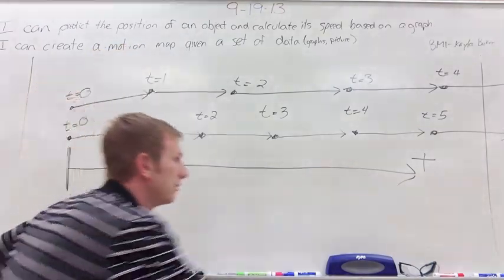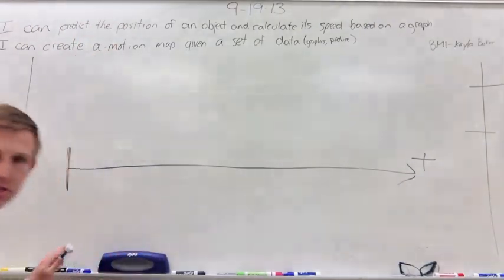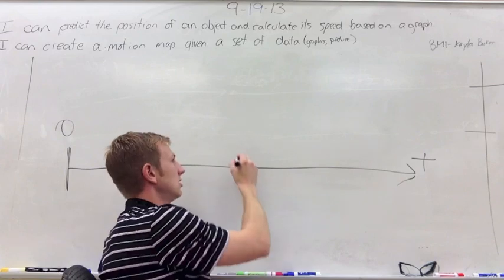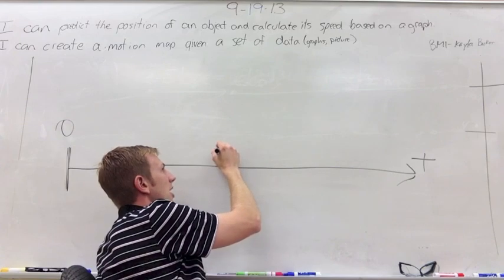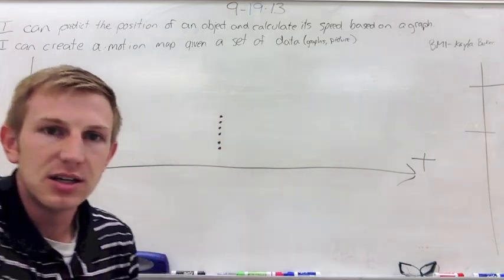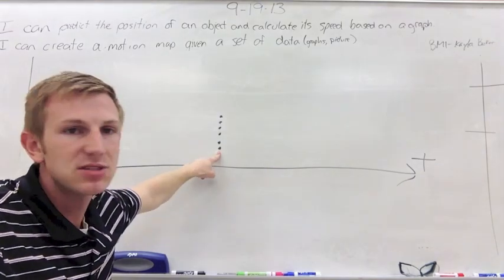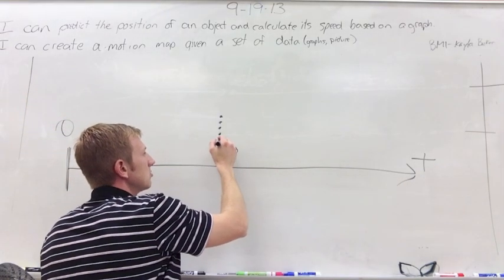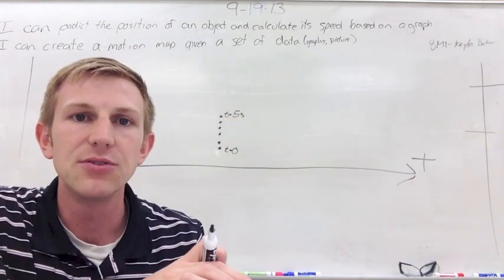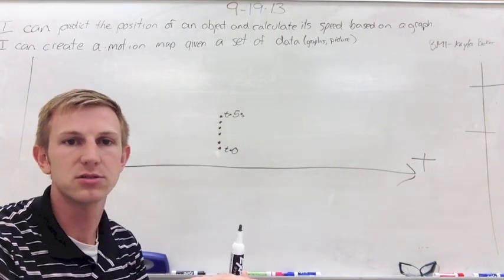Now let's talk about some other motions. Let's pretend that I'm just sitting still. I'm going to give myself a positive starting position, so I'm not starting at zero. I'm going to start kind of in the middle. Now I'm a car parked. So every second, just like last time, I'm going to put a dot — dot, dot, dot, dot, dot. That's about five seconds. Time zero, time one, time two, time three, time four, time five seconds. If you don't go anywhere, you're not moving in a positive or negative position — you're just going to stack these dots.